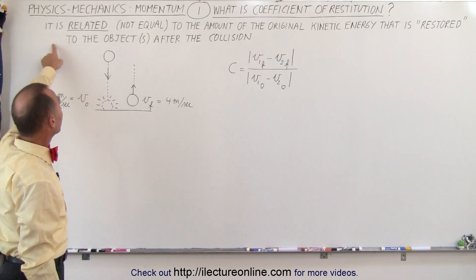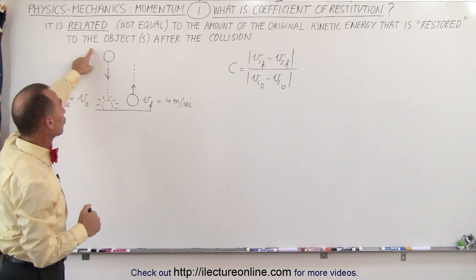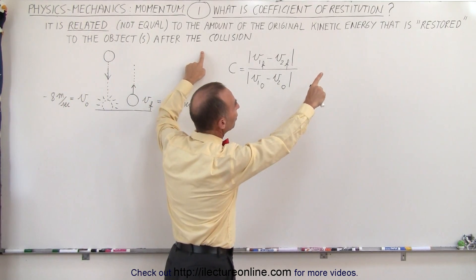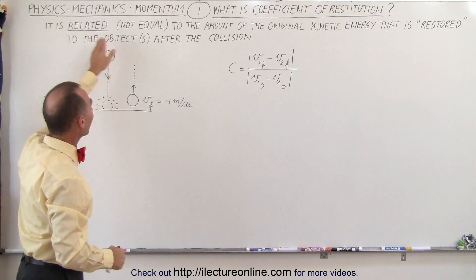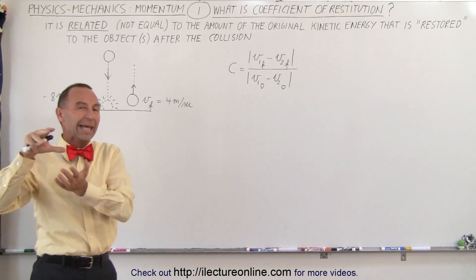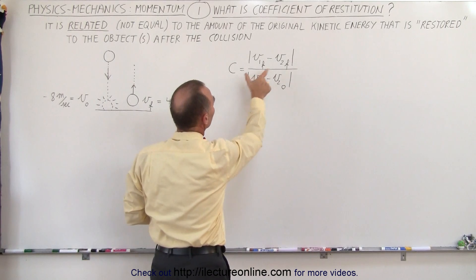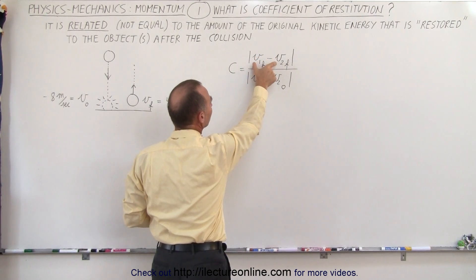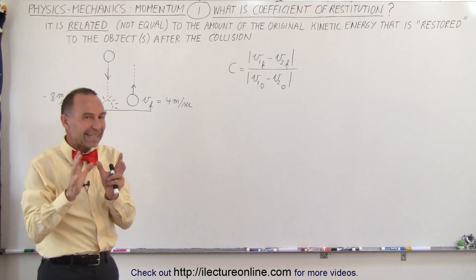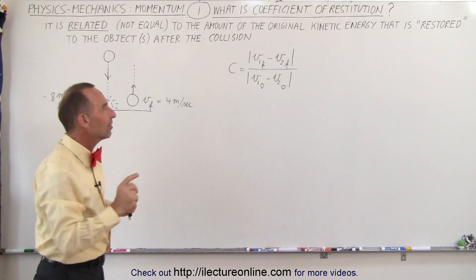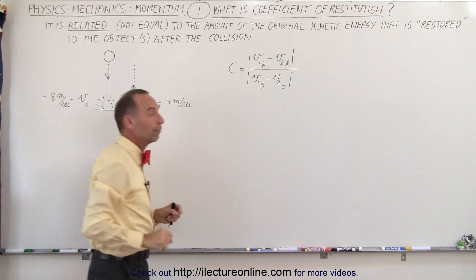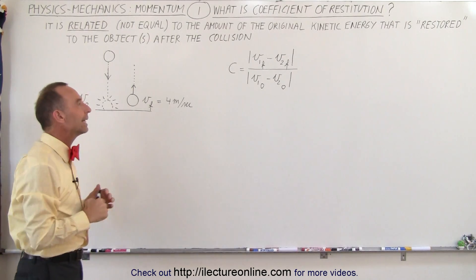The coefficient of restitution is related, but not equal, to the amount of the original kinetic energy that is restored to the objects after a collision. It's a relationship between how much energy we started with and how much we ended up with — basically the ratio of the difference in velocities after the collision divided by the difference in velocities before the collision. We'll see later how that relates to the kinetic energies involved.